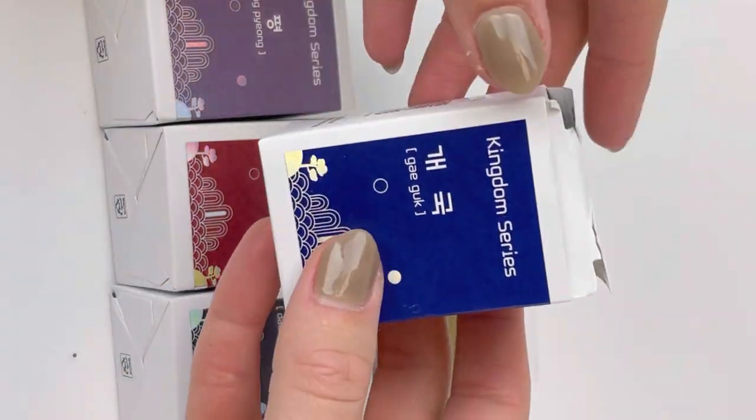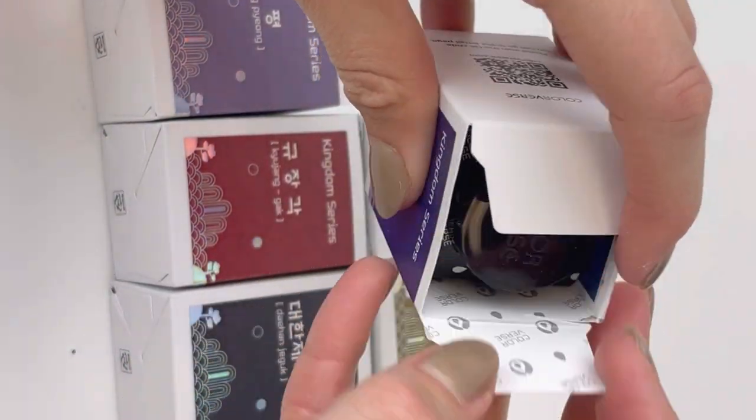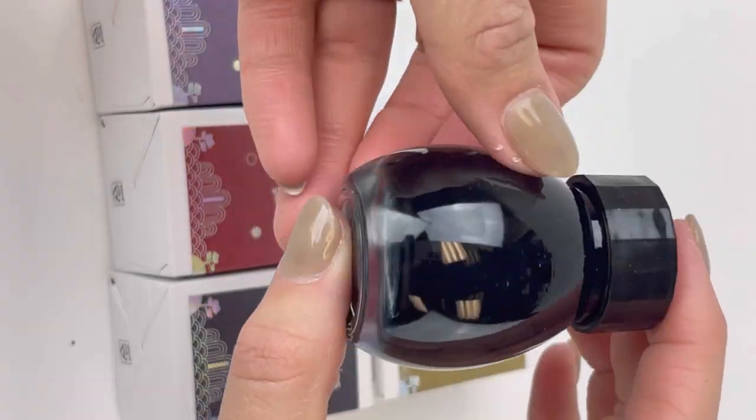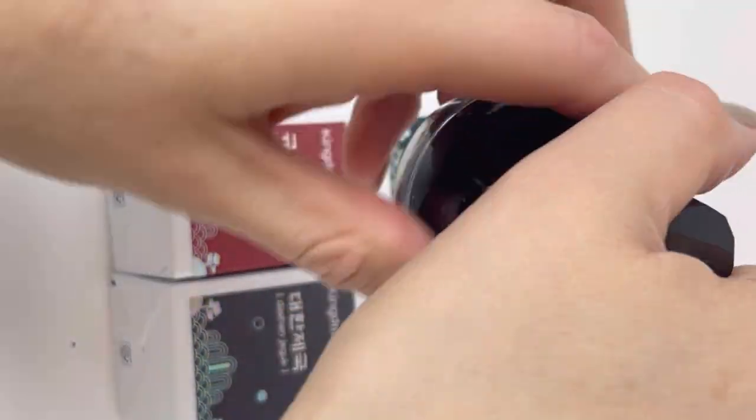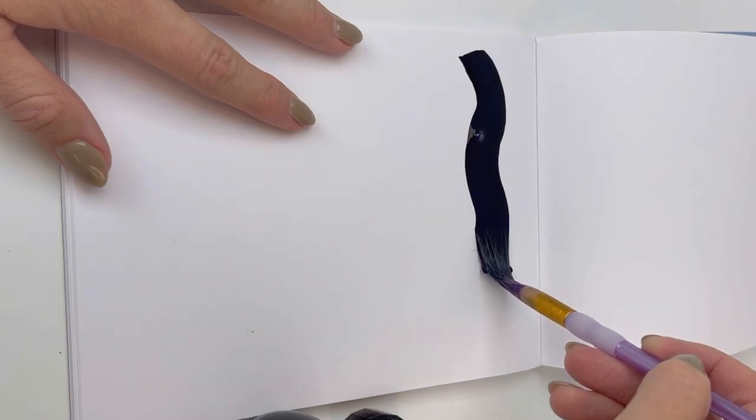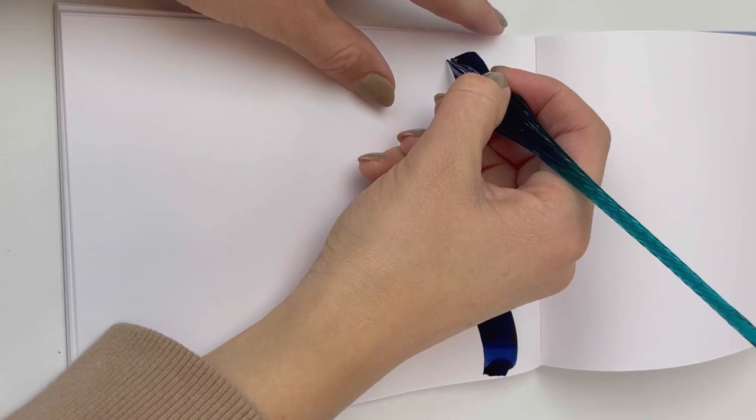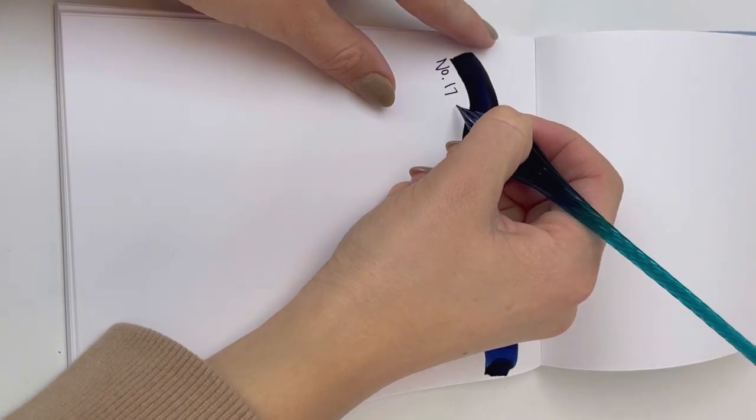We recently featured one of the Colorverse Kingdom Project Series inks, and it was the number 20 purple, Teng Pai Yang, and we had a request to get swatches of all of these out there. So, we're going to go ahead and make swatches of the complete collection for you today.